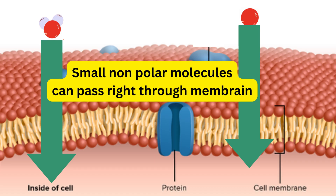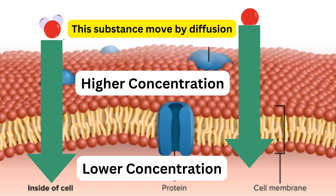Some molecules don't need help to get through the membrane. Small non-polar molecules are able to go right through the lipid bilayer because they are not repelled by the non-polar material. This is how oxygen and carbon dioxide get across, since they are tiny and non-polar. This process is an example of diffusion, where molecules move across the membrane along a concentration gradient, spontaneously moving from higher concentration to lower concentration, just the same way gases spontaneously fill up a room.